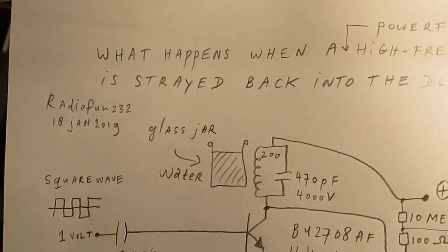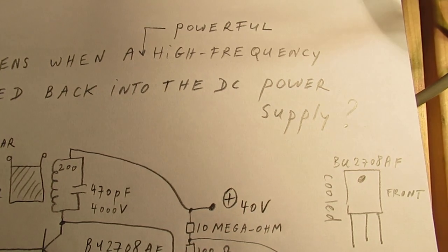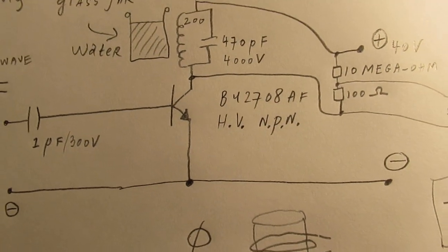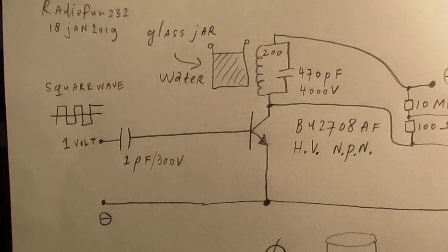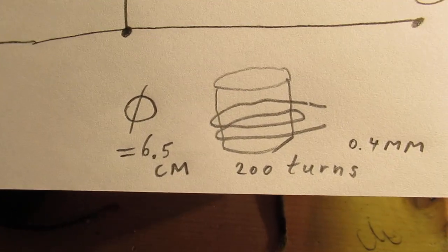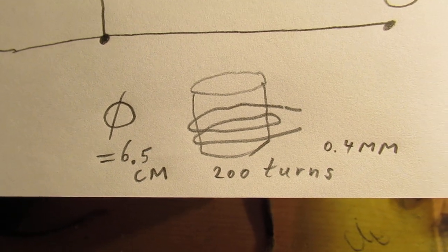So when you want to do such an experiment to send a high frequency into a glass jar, this could be the right circuit. The glass jar has a diameter of 6.5 centimeters and 200 turns.